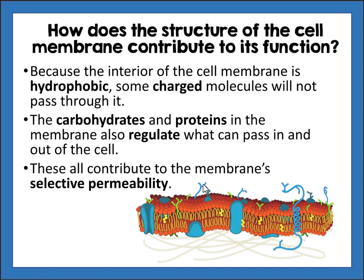The proteins integrated into the cell membrane have receptors that detect what materials are trying to pass through and can either allow some through or not. Some materials pass directly through the membrane, but charged particles cannot and need to use channel proteins. All of these structures together determine what is moving in and out, giving the cell membrane its selective permeability.